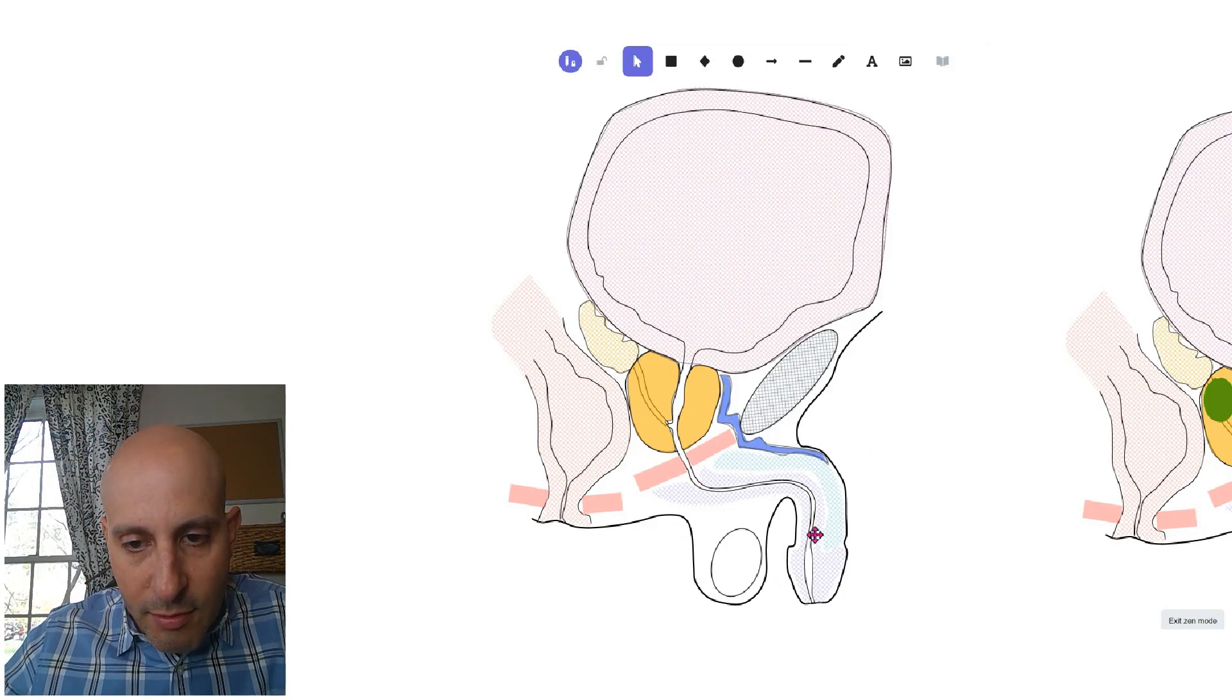The urethra channel runs right through the prostate, out the penis. This is the seminal vesicle, and this is the whole prostate.